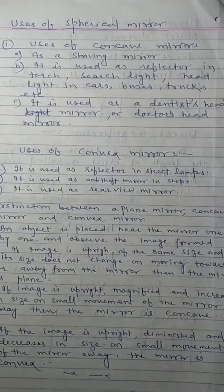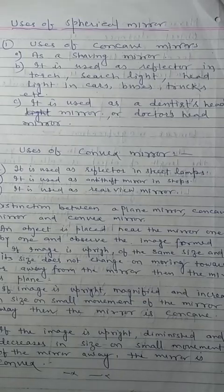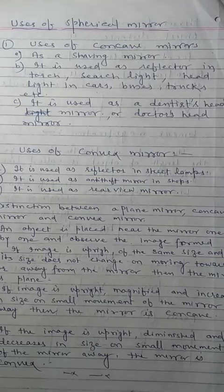Now, usage of convex mirror. First, convex mirror is used as a reflector in a street lamp — to spread the light.